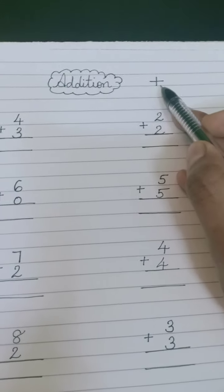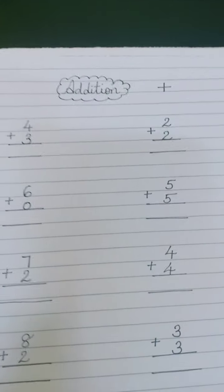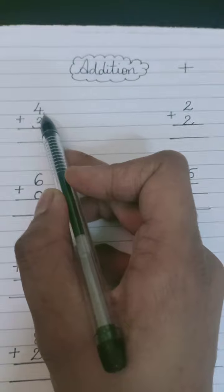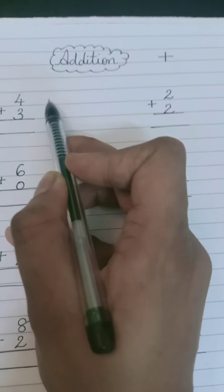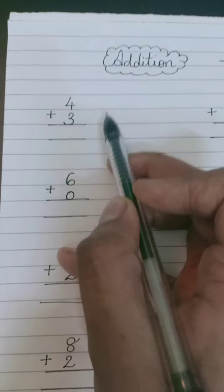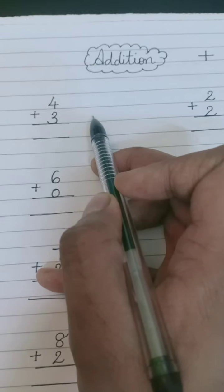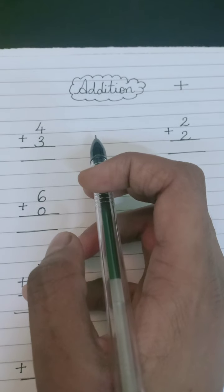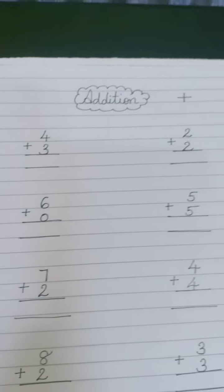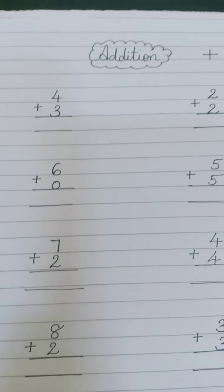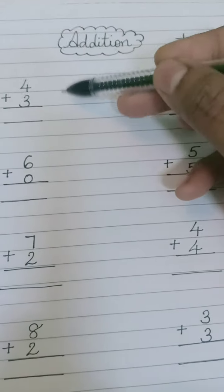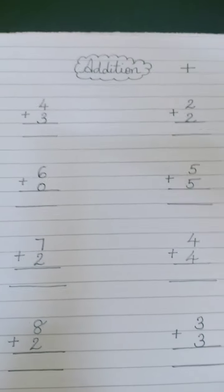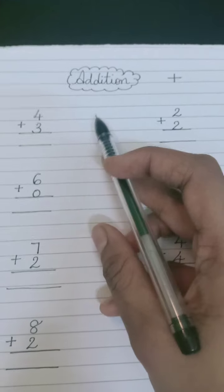Now I will explain this through examples. For KG children, unko addition kis tarike se karaya jata hai? They are told to draw lines for the upper number, then draw lines for the lower number, and add those lines together. This method is useful when introducing addition to young children. Jab bachhe bahut chote hote hain, they cannot calculate in their mind or on fingers quickly. But counting drawn lines is comparatively easy for them. That's why we use line method in KG.